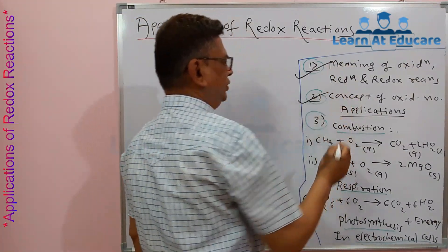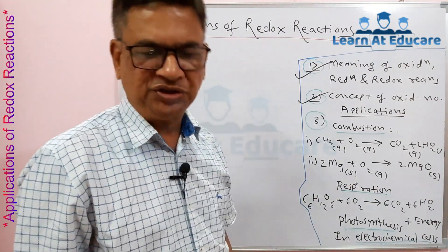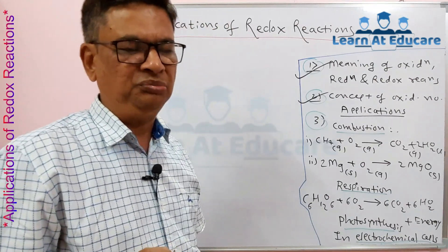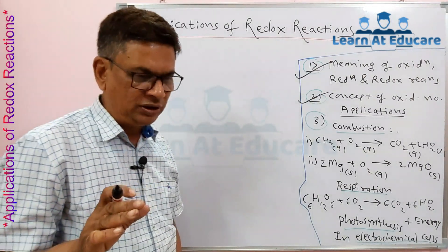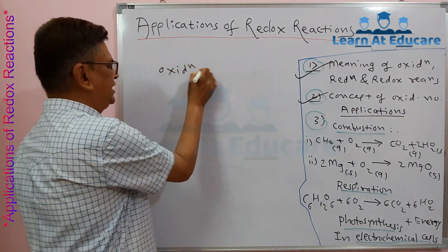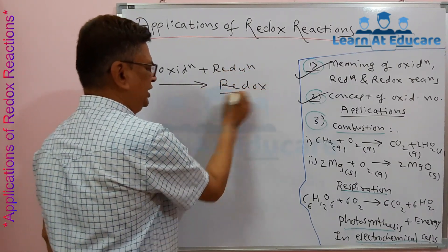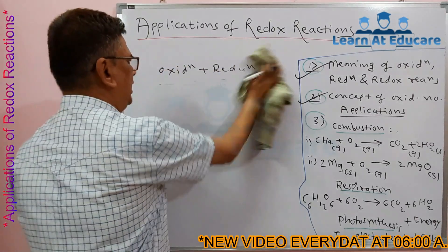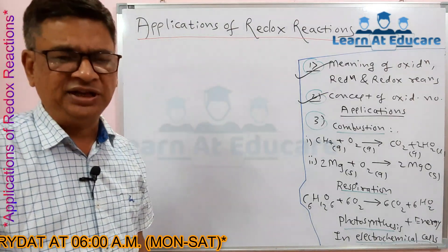As a revision: oxidation is the addition of oxygen or removal of hydrogen. The modern concept is that oxidation is the loss of electrons, while reduction means gain of electrons. Only oxidation or only reduction never occurs alone — their combination gives a single redox reaction, meaning when one substance is oxidized there is always reduction of another substance.